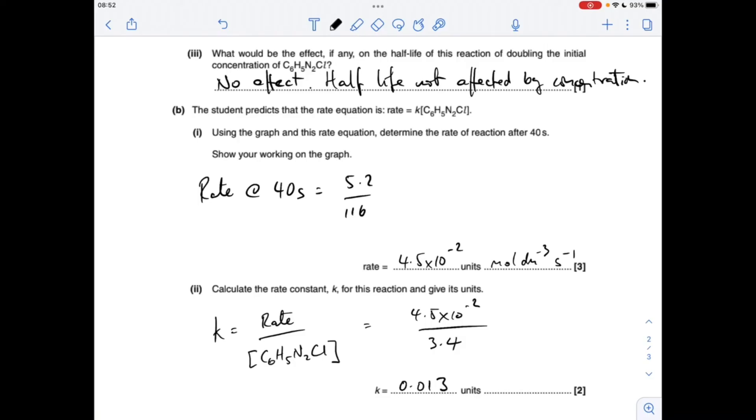So that's giving me a k value of 0.013. And in terms of units, I've got the units there of rate over the unit of concentration. You see they'll cancel. So it's seconds to minus 1.